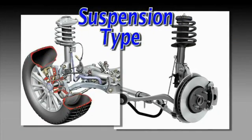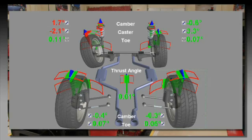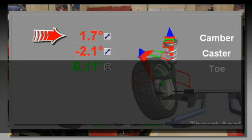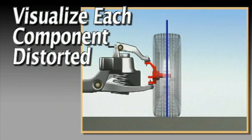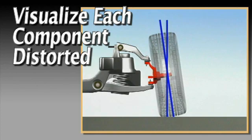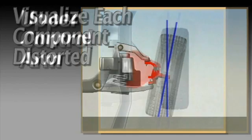Note the type of suspension used at that wheel position, then record the alignment angles in question. In this case, camber on the left front is extremely positive and caster extremely negative. Next, one component at a time, visualize how it would have to be distorted to create alignment error at that wheel.